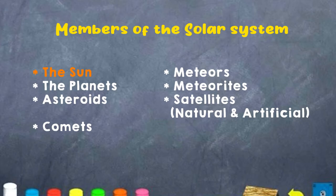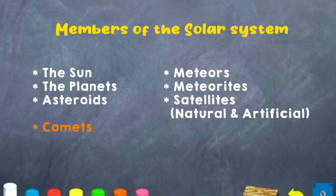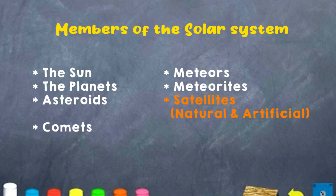Who are the members of the solar system? We have, boys and girls: one, the sun; two, the planets; three, asteroids; four, comets; five, meteors; six, meteorites; seven, satellites.